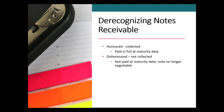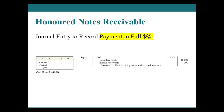We have two instances in which we would de-recognize a note receivable. One is if they pay in full at maturity, and the other is if they don't pay — otherwise known as being dishonored or not collected — and we write off the note. In the happy scenario where they pay in full, we collect the $10,000 principal plus the $200 in accrued interest and receive cash for that total amount.